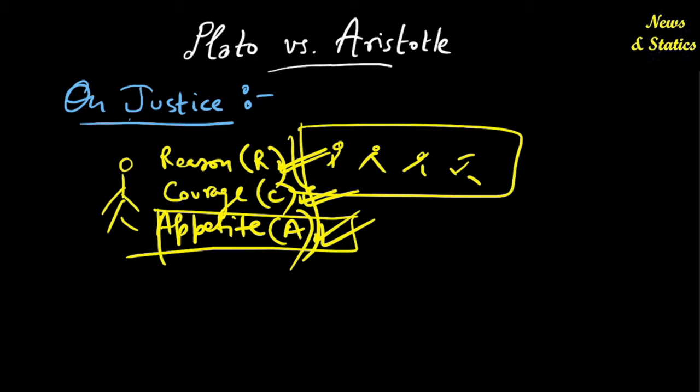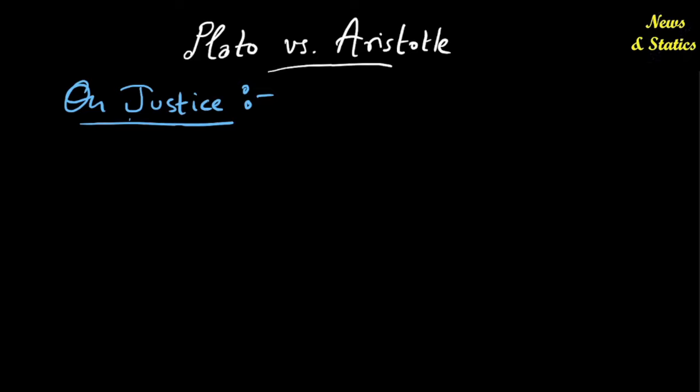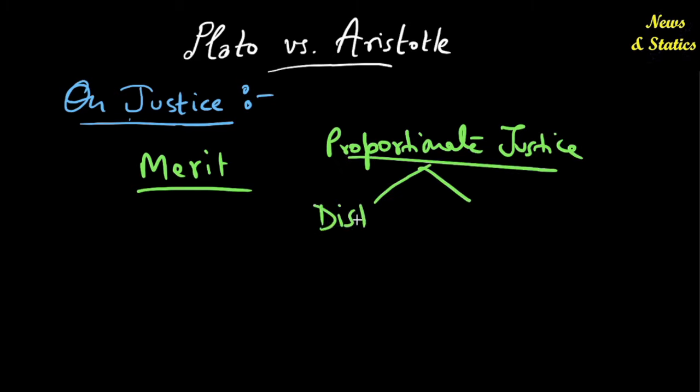So for Aristotle, justice meant meritocracy. For Aristotle, justice meant that everyone should be given their due based on merit. Merit was a very important factor for Aristotle and he called it proportionate justice. That is giving people their due proportional to their merit. This had two categories. One was distributive justice and one was rectifying justice. Distributive justice means give everybody, if you have 10 chocolates in a classroom, then it should be given to different students based on their marks in the examination. That would be distributive justice.